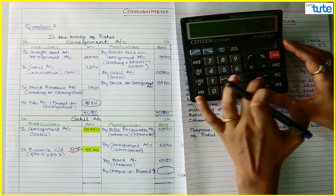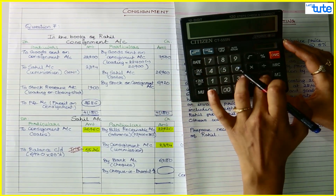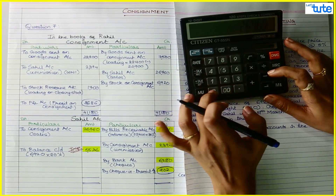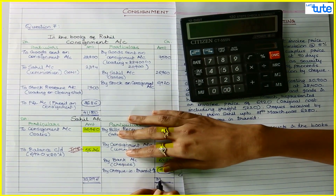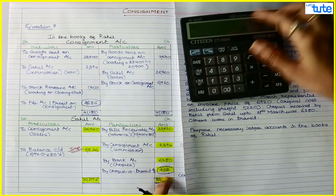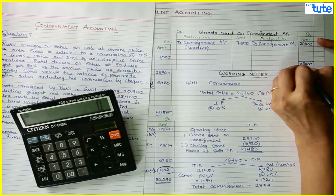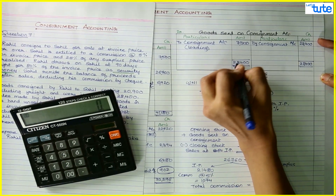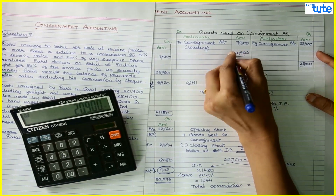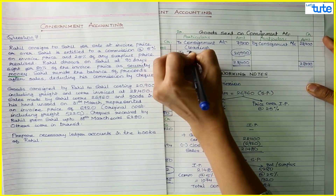Total for Sahil account: 26,760 + 5,536 = 32,296; minus advance 22,720, minus commission 2,394, minus cheques received 6,280; balance 902 represents cheques in transit. For the goods sent on consignment account: 28,400 on one side and 28,400 on the other — after removing loading of 7,500 the cost is 20,900, which is adjusted against trading or purchases account.